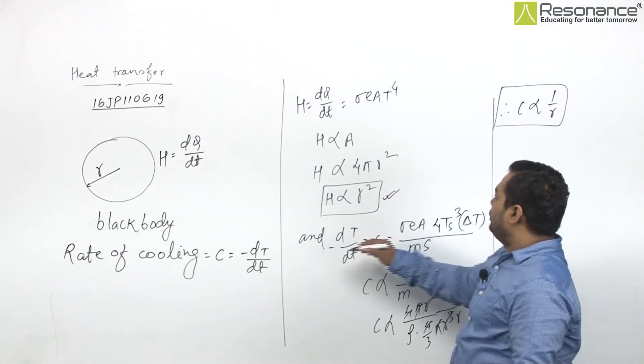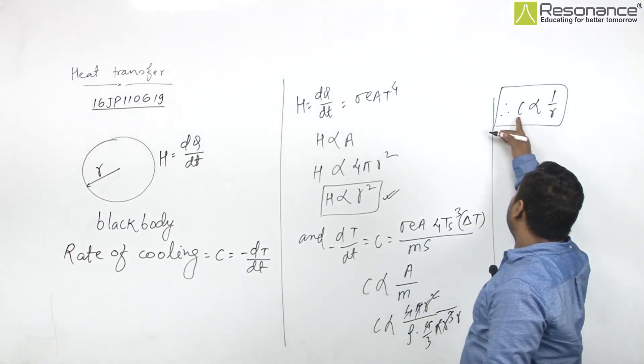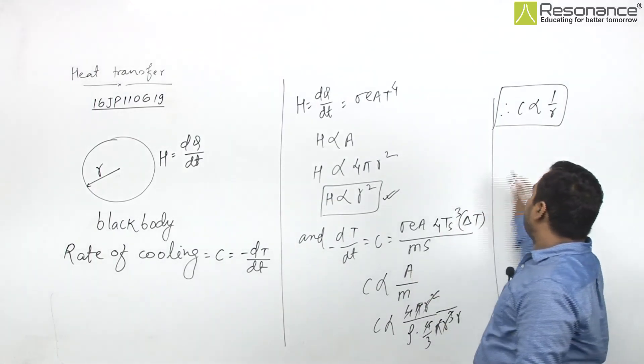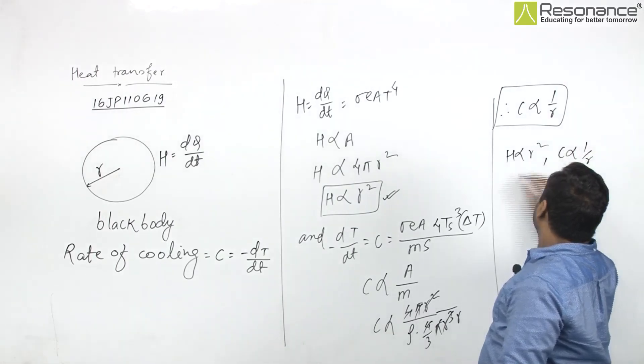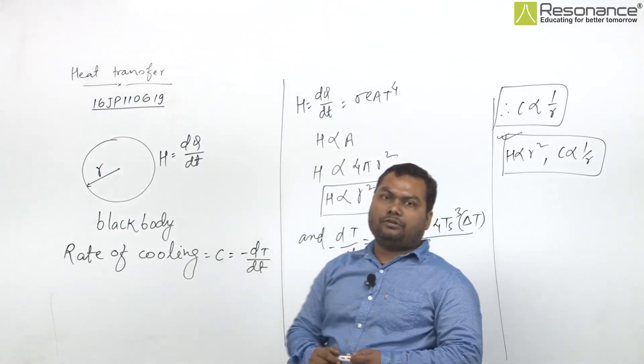So in this way, in this question we have two relations: H with R as H proportional to R squared, and C with R as 1 upon R. So these two are our desired relations for this question which has been asked.